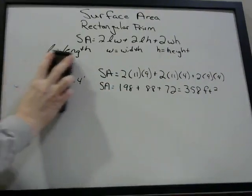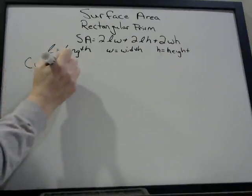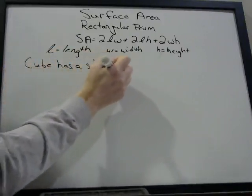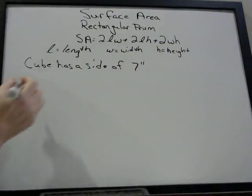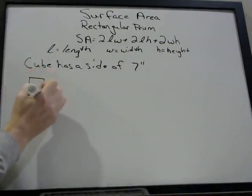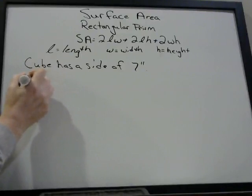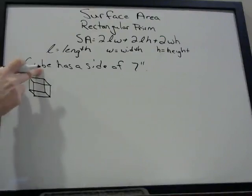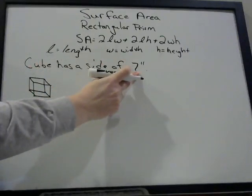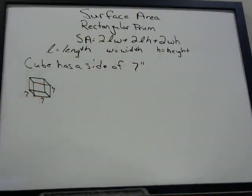Let's say they give us a problem that says a cube has a side of 7 inches — what's the surface area? One thing you need to know: a cube is just a rectangular prism in which all of the sides have the same length. Just like the square is a special case of the rectangle, the cube is a special case of the rectangular prism where all the sides are the same length. That's why they only need to give us the length of one side.